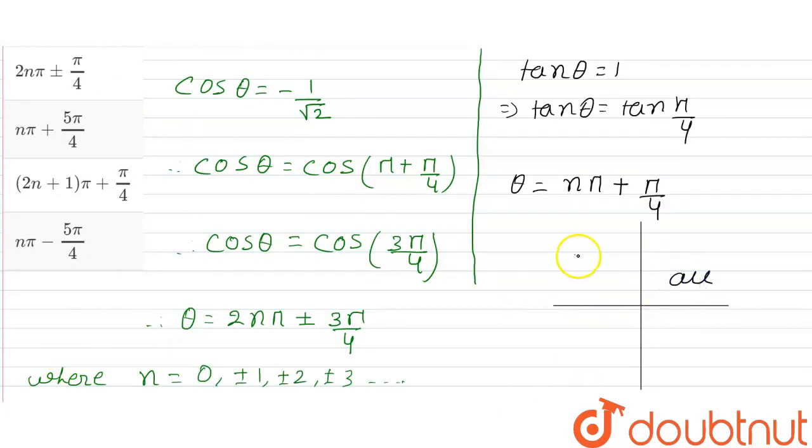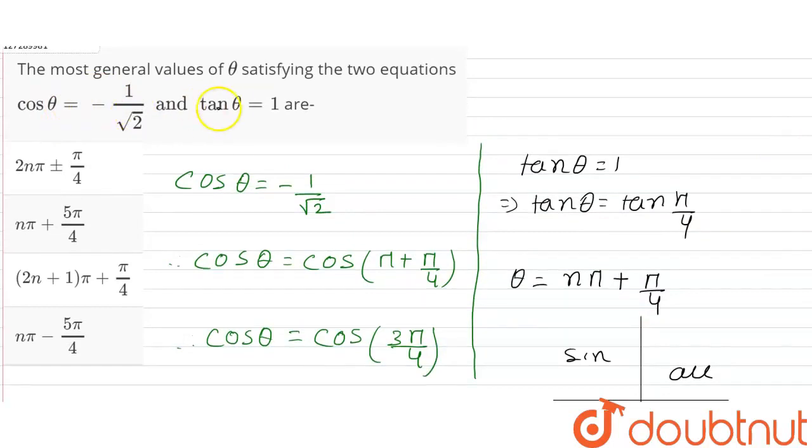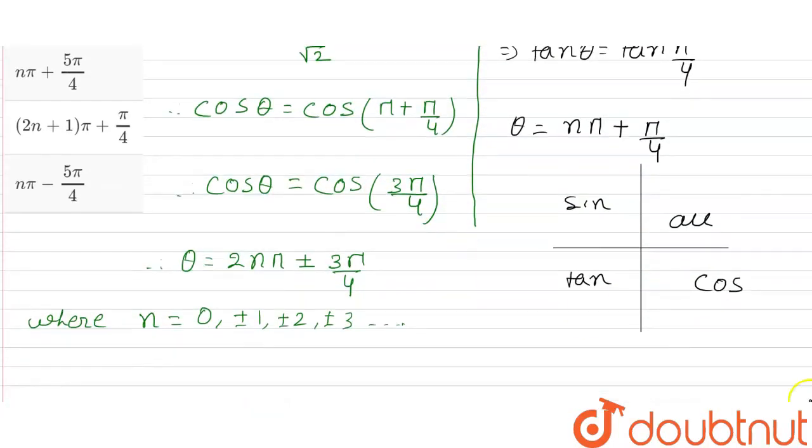Tan theta by 4 equals 1. We compare the equations: cos equals minus 1 by root 2 and tan equals 1. That means theta is in the third quadrant. Theta must be in the third quadrant.